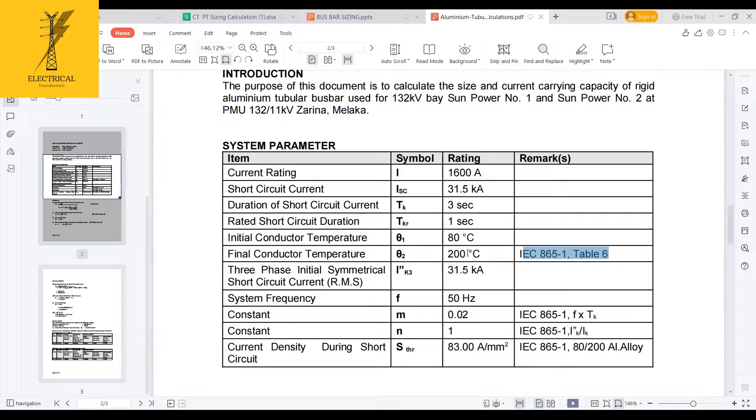And this, you already know, short circuit current. Frequency is 50 hertz. And the M and N, I am getting from IEC 865, from the graphs, what I have shown before in the presentation. And this is the current density during the short circuit current. This is for the aluminum alloy, as per IEC 865, which is 83 amperes per mm square.